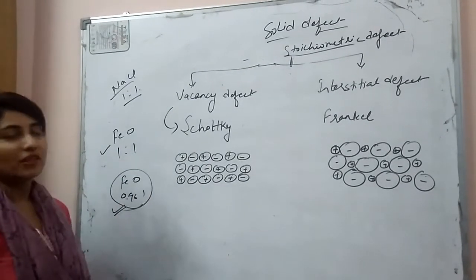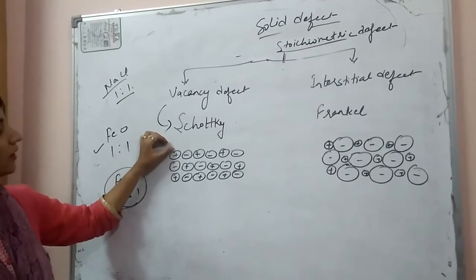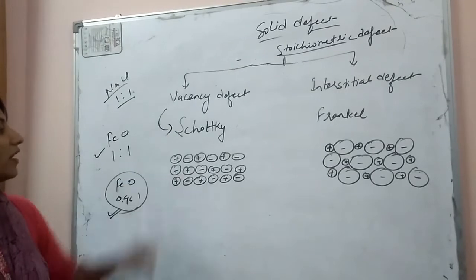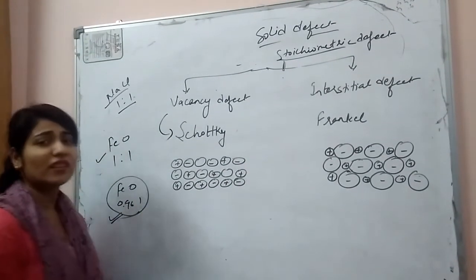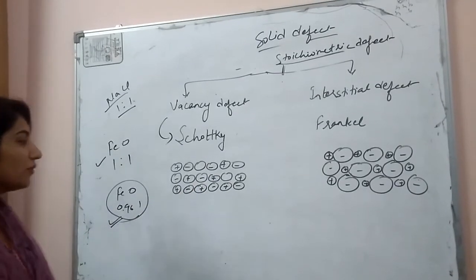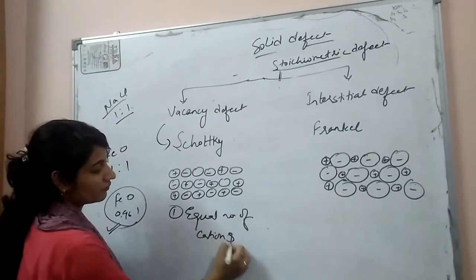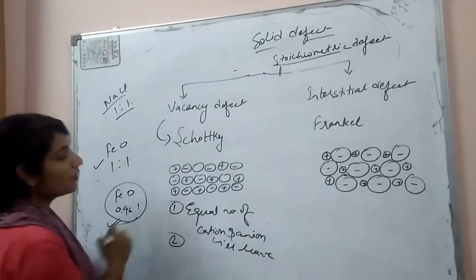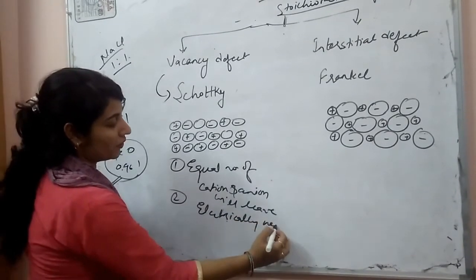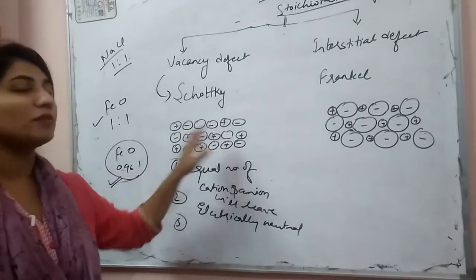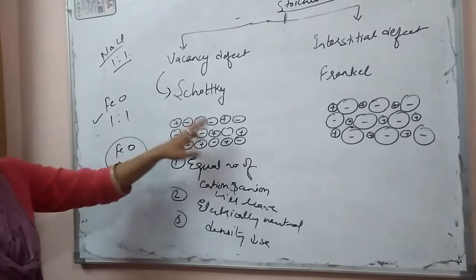Vacancy defects are known as Schottky defects. If we take the example of NaCl, we can see the crystal where Na⁺ ion and Cl⁻ ion are present. In a Schottky defect, if one cation leaves its site then one anion will also leave its site. So equal numbers of cations and anions will be missing from their sites. Because equal numbers of cations and anions leave their sites, the crystal will be electrically neutral. As cations and anions are missing from their sites, density will decrease.